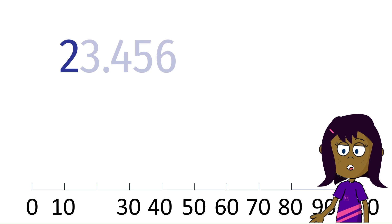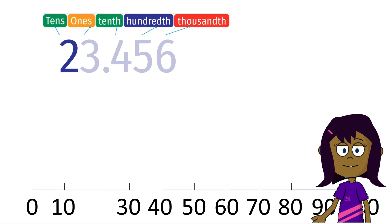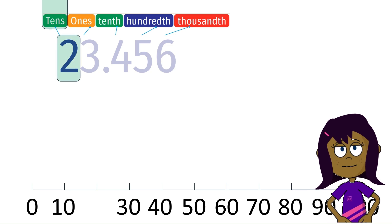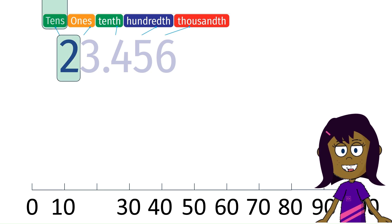Let us start with the highest place value. Two in the tens place, its place value is 20. On the number line, let us draw an arrow to locate its position.